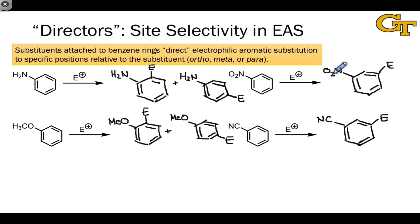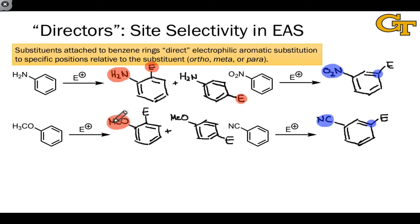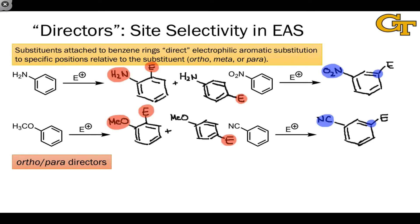What appears to be happening is that the substituents NO2 and CN are directing substitution to the meta position. In the left-hand cases, the NH2 substituent appears to be directing substitution to the ortho and para positions, while the methoxy substituent also seems to be directing substitution to the ortho and para positions. We refer to NH2 and OCH3 as ortho-para directors, and we refer to the cyano group and the nitro group as meta directors.